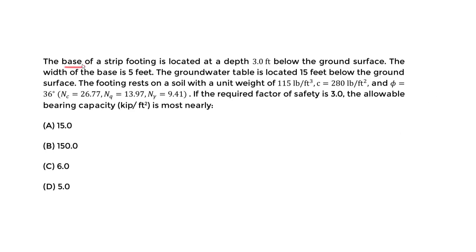We're told the base of a strip footing is located at a depth of 3 feet below the ground surface. The width of the base is 5 feet. The ground water table is located 15 feet below the ground surface — from the ground surface we go down 15 feet, that's where the ground water table is located.